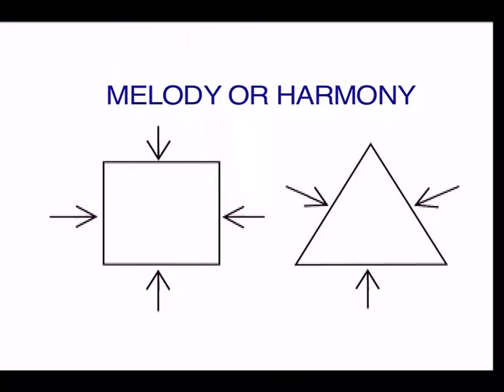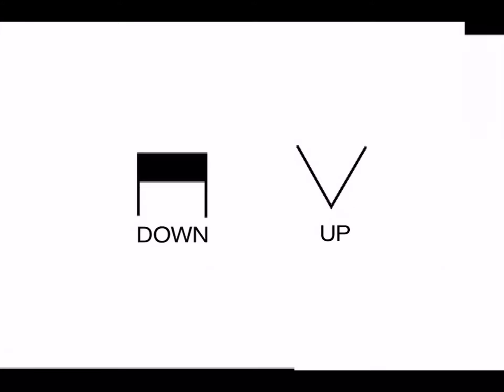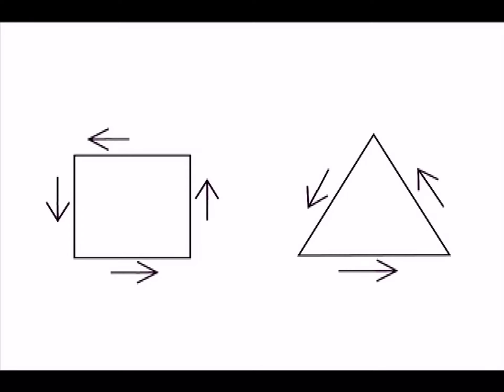The notes on the outside of the figures will be used for the melody or harmony. Inside the geometric figures, we find the symbols for strumming either up or down. Read the measures starting at the top of the figure, and follow the notes counterclockwise.